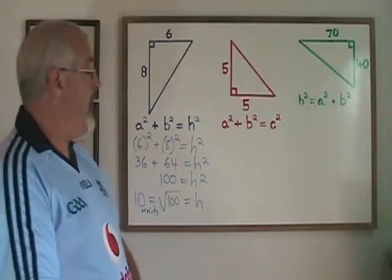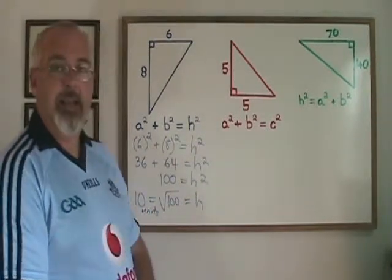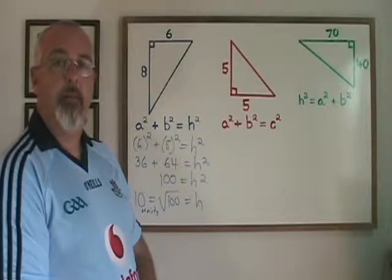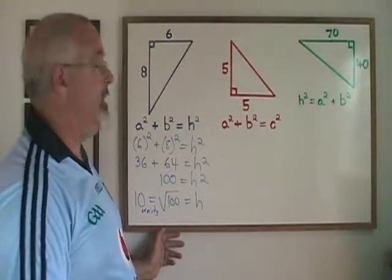Now most right triangles, when you use Pythagoras' theorem, will not give you a convenient round number like 10 as the answer. Very often the answer will be a decimal that has to be rounded off. Our second example, the red right triangle, is one of these examples.